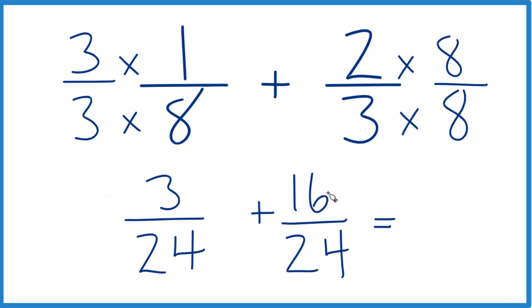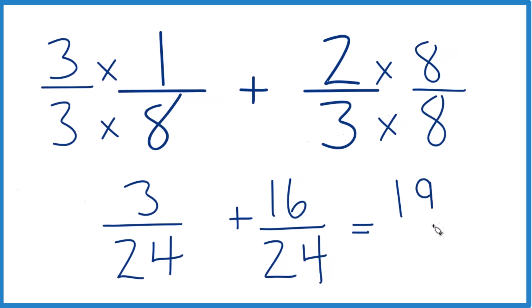Add the numerators. 3 plus 16, that's 19. And then we just bring the 24 across, and we're done.